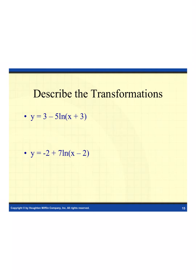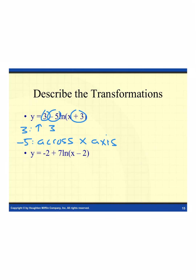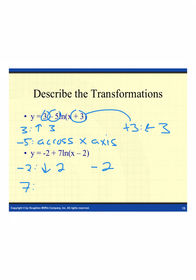To describe the transformations for our first natural log function: we have a 3 (moves the function up 3), a negative 5 (reflects across the x-axis and affects the rate of increase), and a positive 3 inside with x (horizontal shift to the left 3). For the second function: negative 2 is the d value, moving the whole thing down 2; 7 affects the shape with no reflection; and minus 2 with the x-value moves the function to the right by 2.